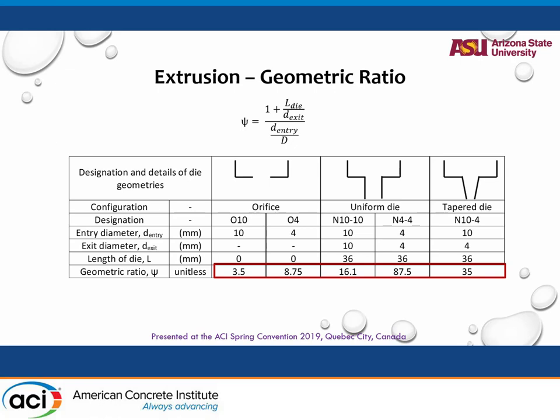We defined a term called the geometric ratio — a geometric factor based on die length, exit length, entry length, and the diameter of the barrel. If it's an orifice, you have really low geometric ratios. If you have a die, you have higher geometric ratios, and as the die cross-section gets smaller, the geometric ratio goes up. Higher geometric ratios tell you that you have a worst-case scenario with respect to pumping — a larger barrel coming into a really small die that squeezes material in, causing much larger material change.